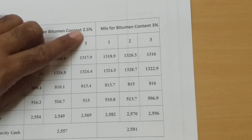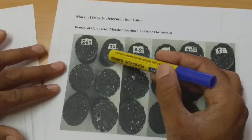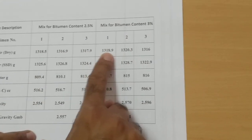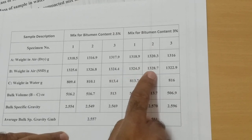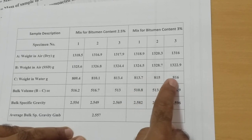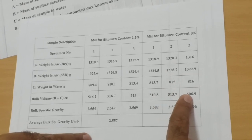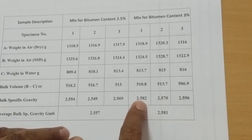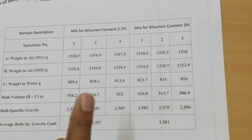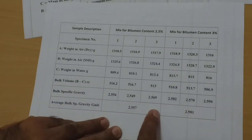Now let me increase the bitumen content to 3%. For these Marshall specimens at 3% bitumen content, I have written the dry weight, SSD weight, and weight in water for all three specimens. This gives the volume for each specimen, then the Gmb is calculated and averaged. You can see that as the bitumen content increases, the Gmb value is also increasing.